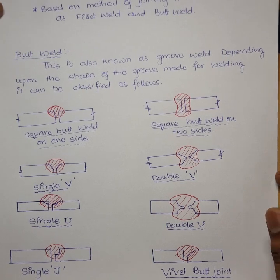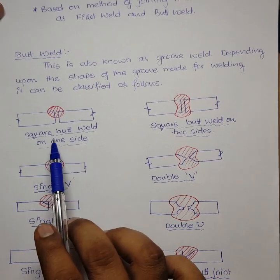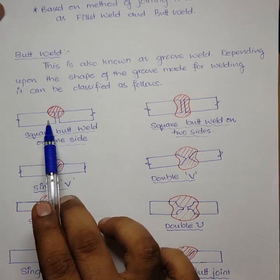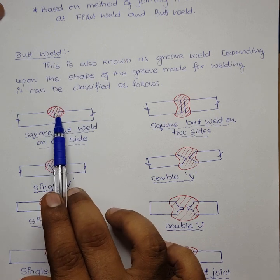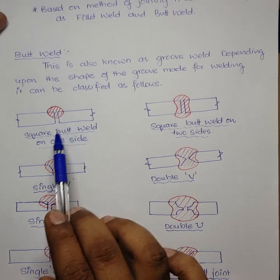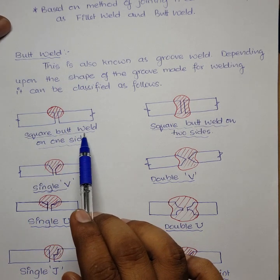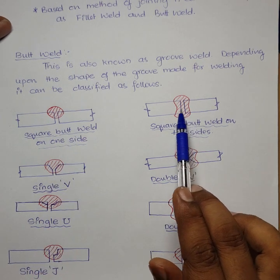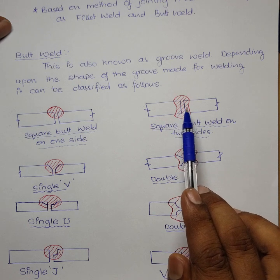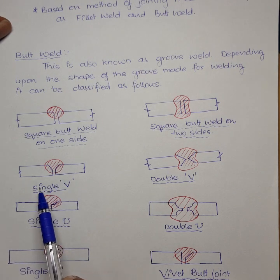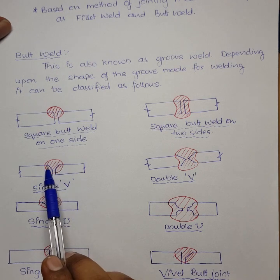The first type is the square butt weld on one side — the two metal pieces are kept near each other and welded directly with no shaping. The same weld done on both sides is called a square butt weld on both sides.